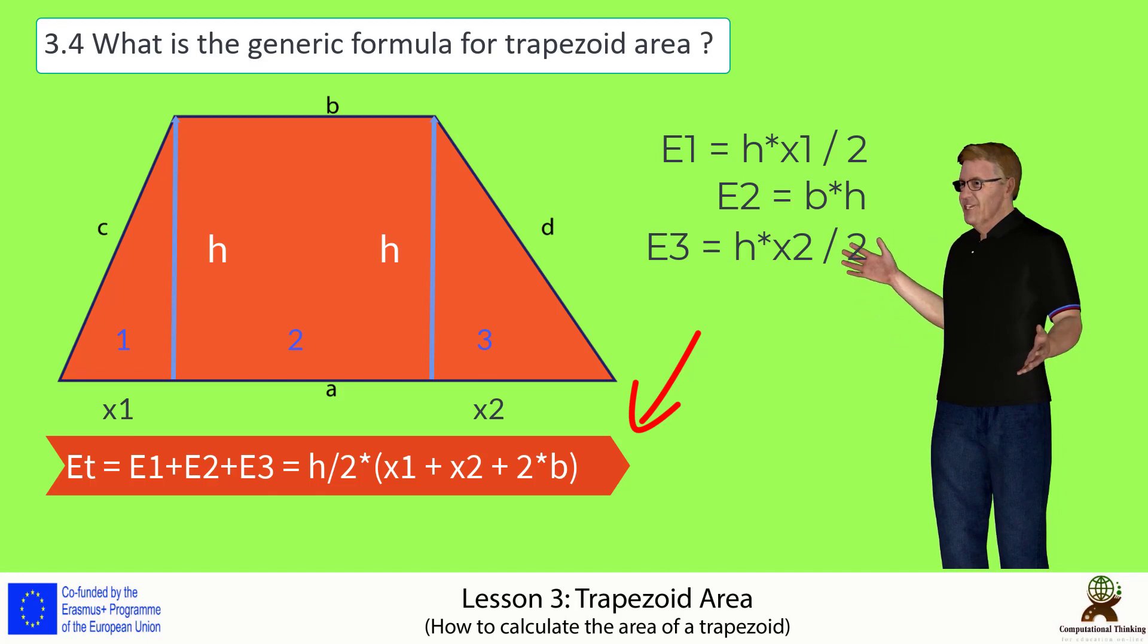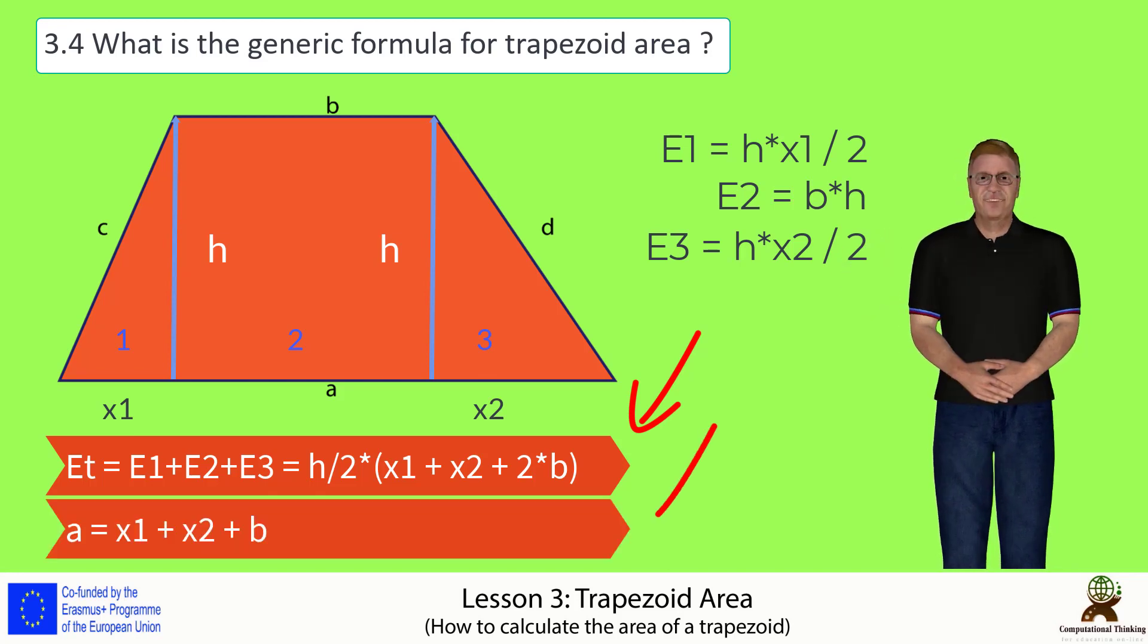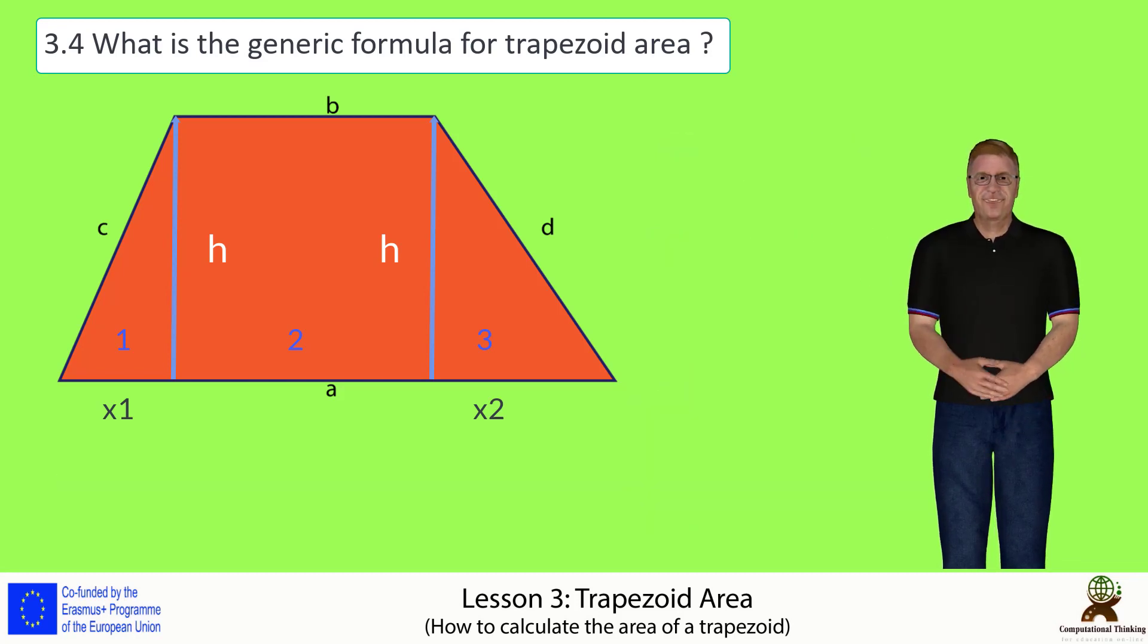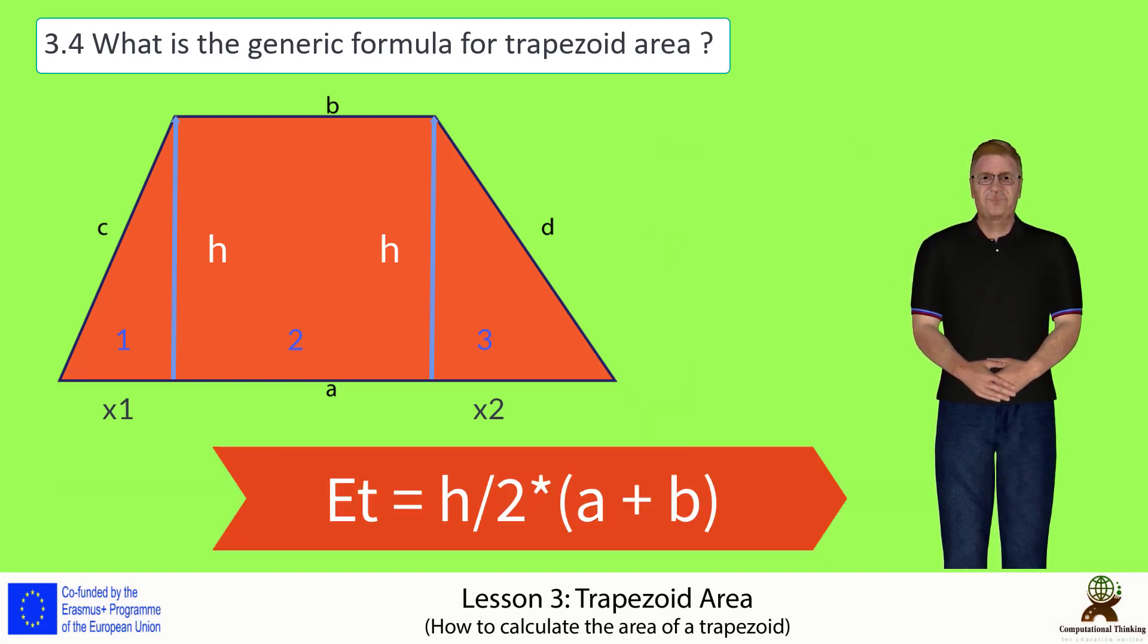But, if we take a more careful look at this relationship and bear in mind that the base A is equal to X1 plus X2 plus B, then the relationship becomes equal to H divided by 2 multiplied by A plus B.